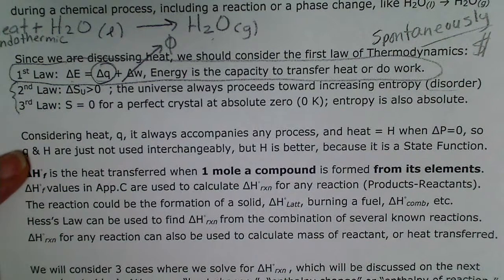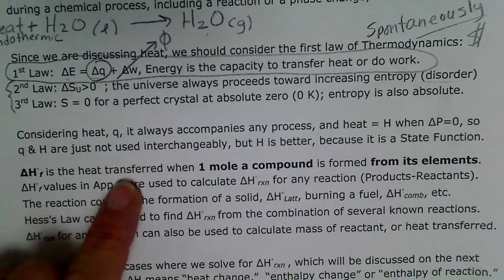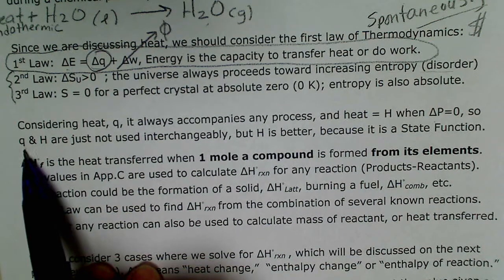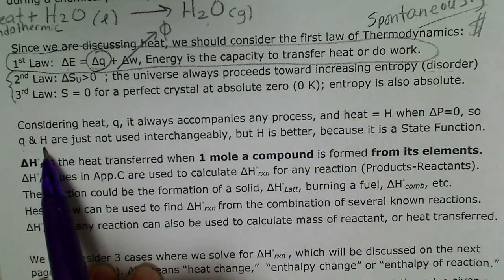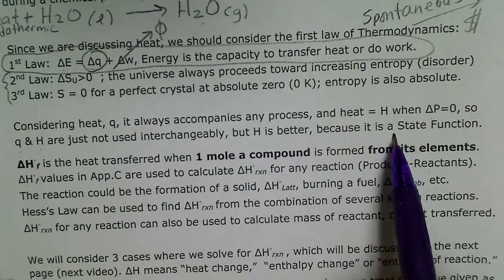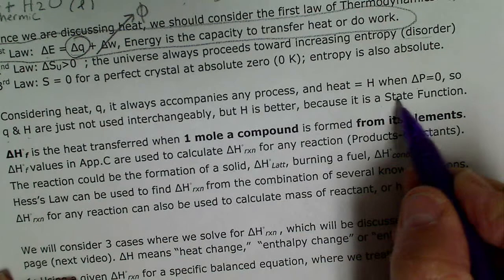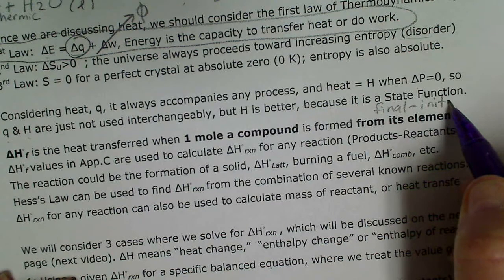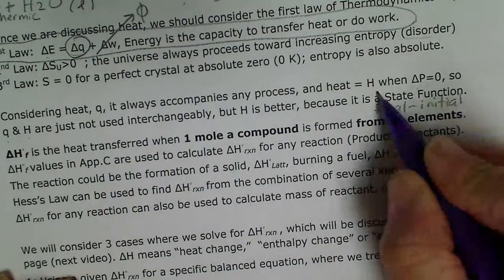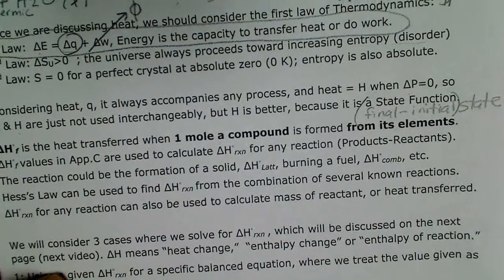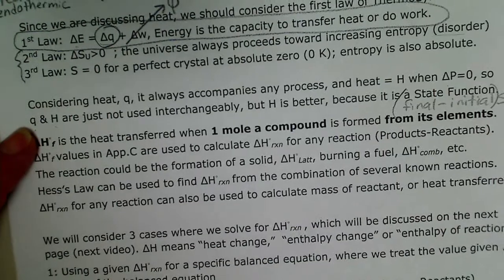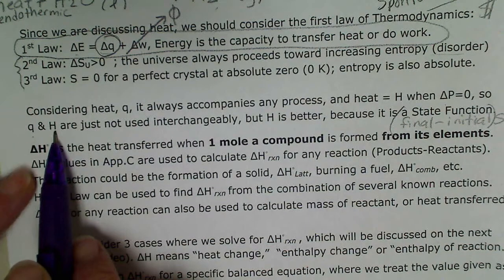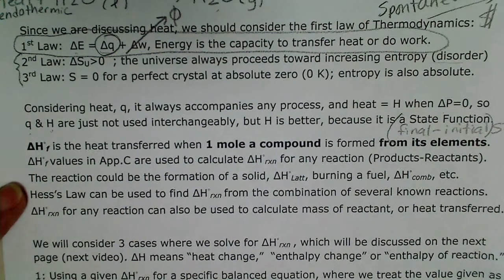If heat is transferred when pressure is constant, we can replace the lowercase letter Q with a capital letter H. A capital letter is a state function, which makes the math easy. All we care about for state functions is final minus initial state — it is not dependent on the path taken. A lowercase letter would be path-dependent, making the math much more complicated. It's very useful that we can use state function values because many of them are already known.